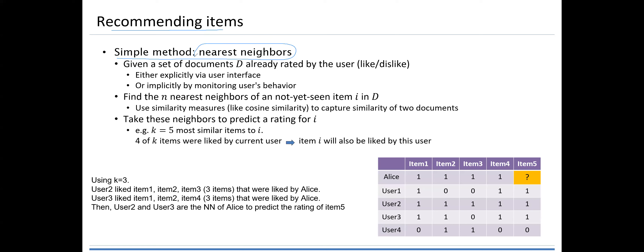What you already learned in the previous section means you already have the users. You can measure the similarity not only between two users, but you can also look at n nearest neighbors. Given a set of documents already rated by the user, the rating will be like or dislike — one means like. This rating can be gathered either explicitly via user interface or implicitly by monitoring user behavior.